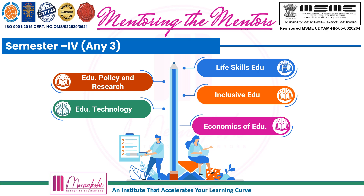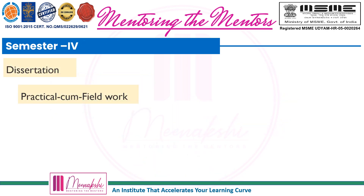For subjects like Life Skills Education, Inclusive Education, and Education Policy and Research, you have to opt for either Elementary Education or Secondary Education, and this choice remains the same throughout your two-year course. You cannot switch from elementary to secondary between different semesters. You can choose any three subjects out of these five. Along with those three papers, there will be a 100-mark dissertation to submit, plus practicals and fieldwork based on the problems highlighted in your chosen fourth semester subjects.